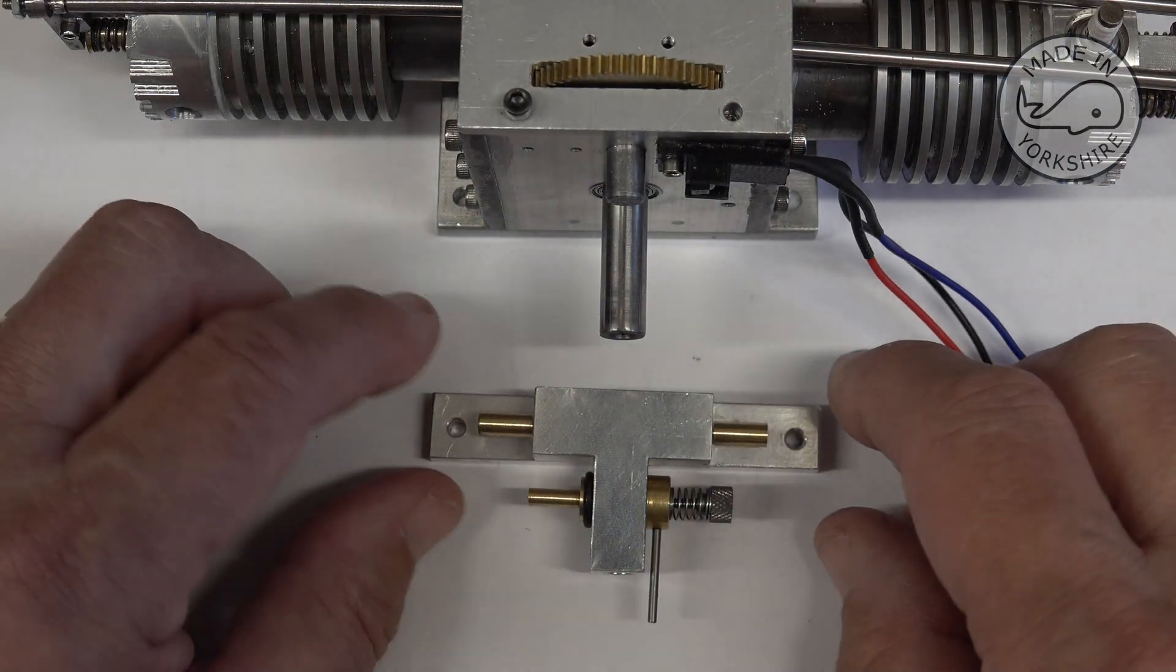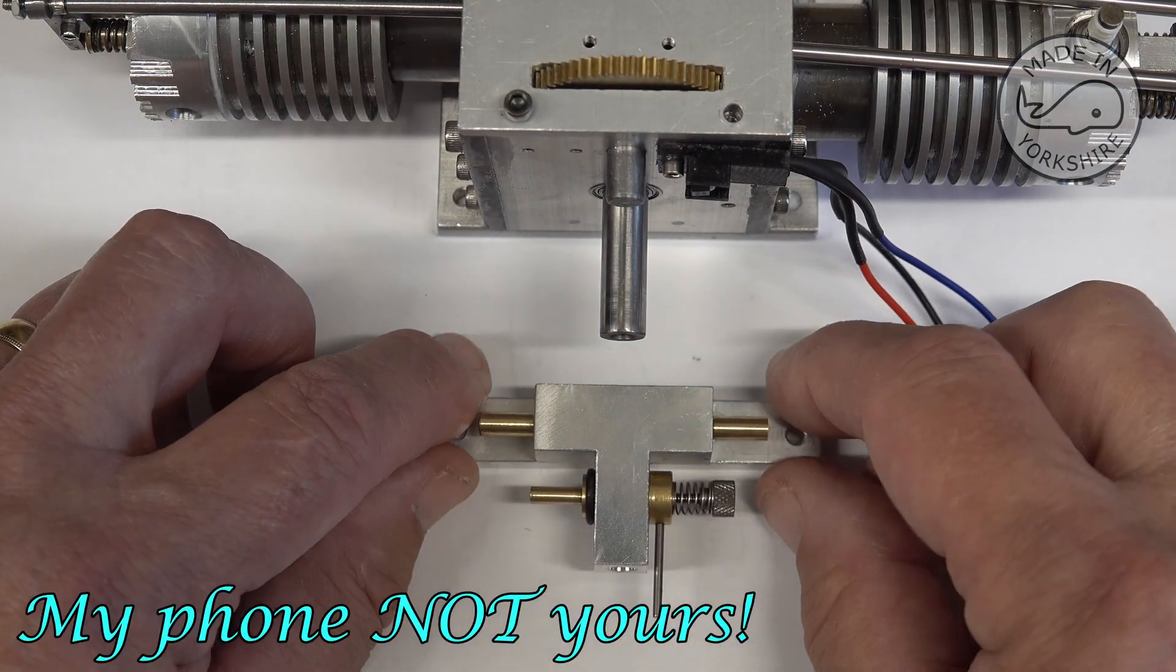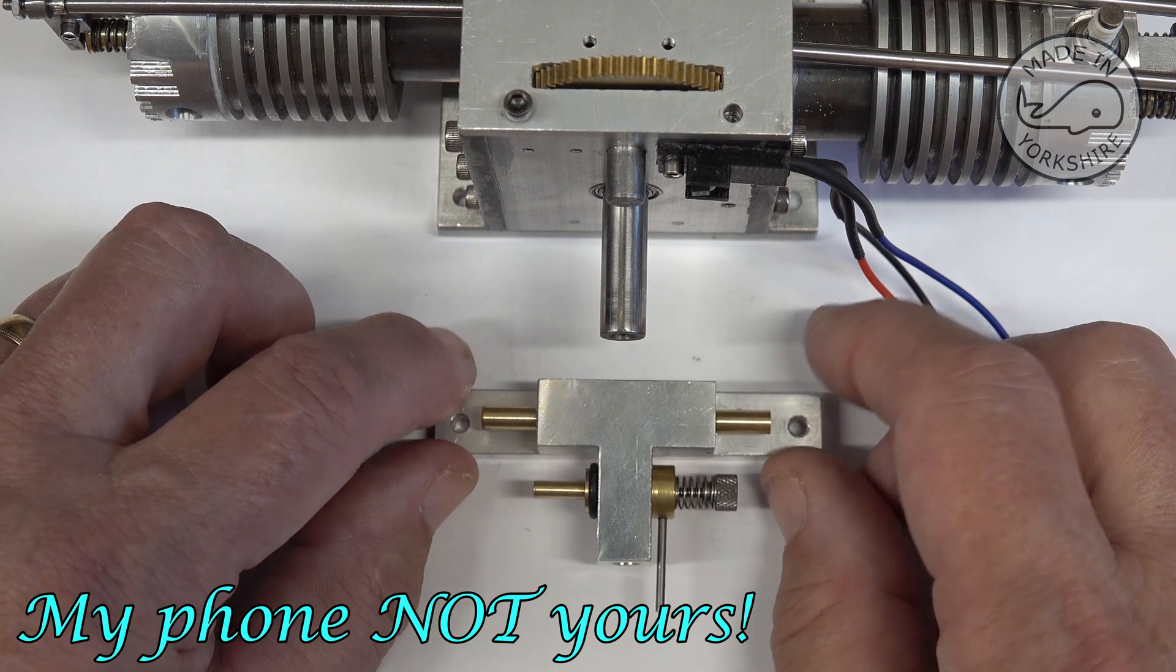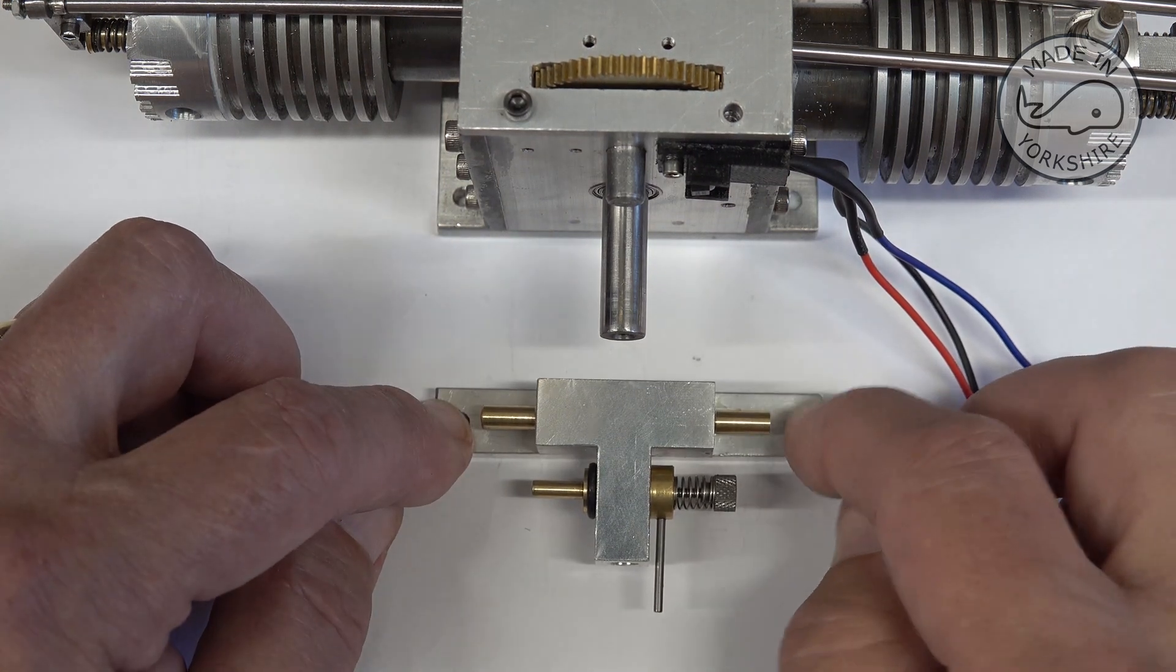Now the carburetor's pretty straightforward and I didn't show any machining of this. I just followed the dimensions in the drawing. The only obvious thing is this plate here.